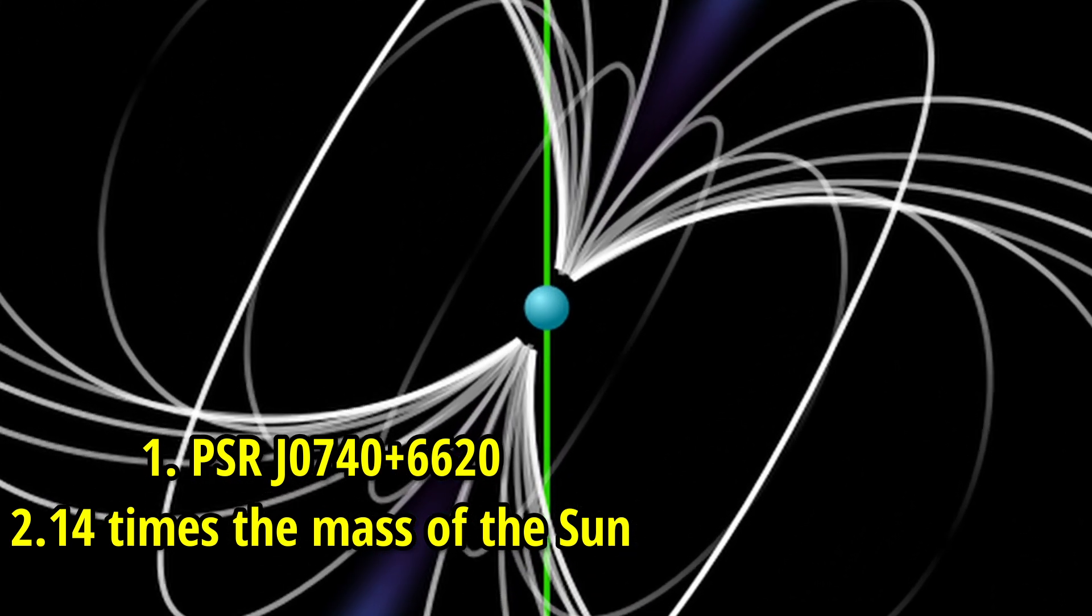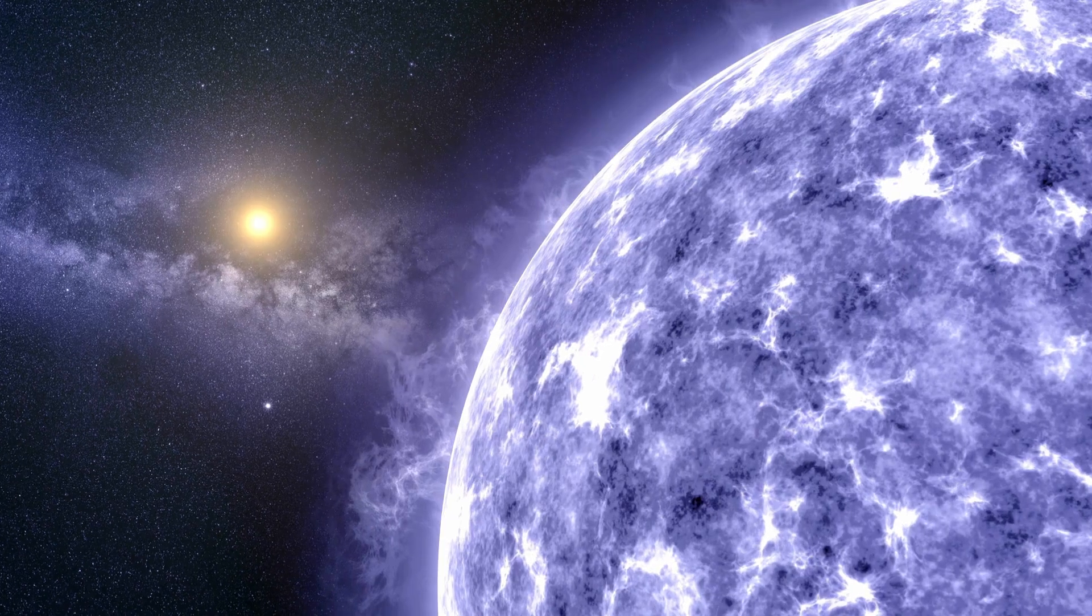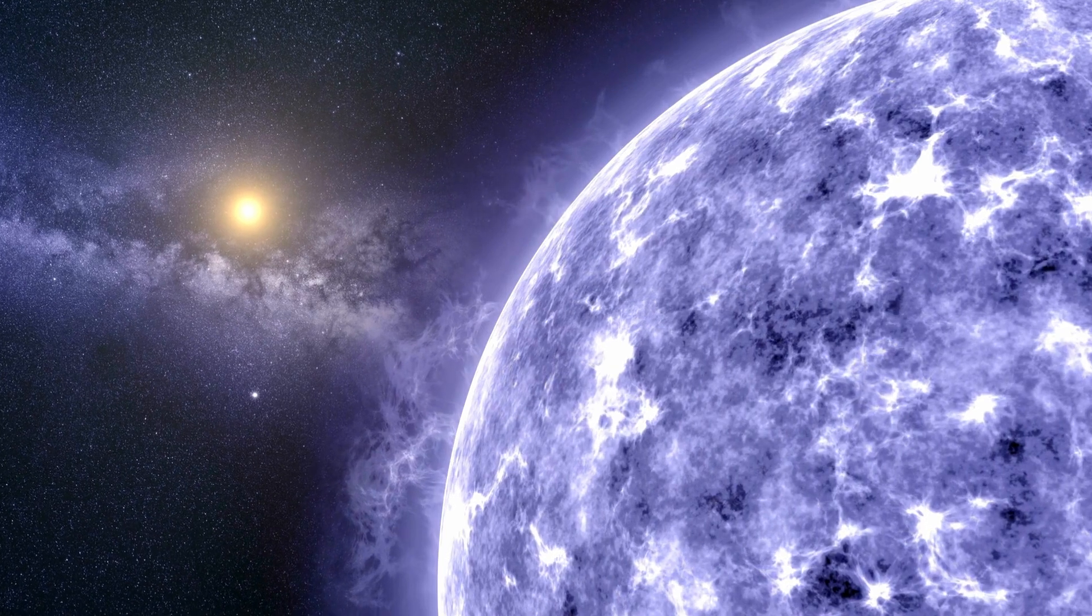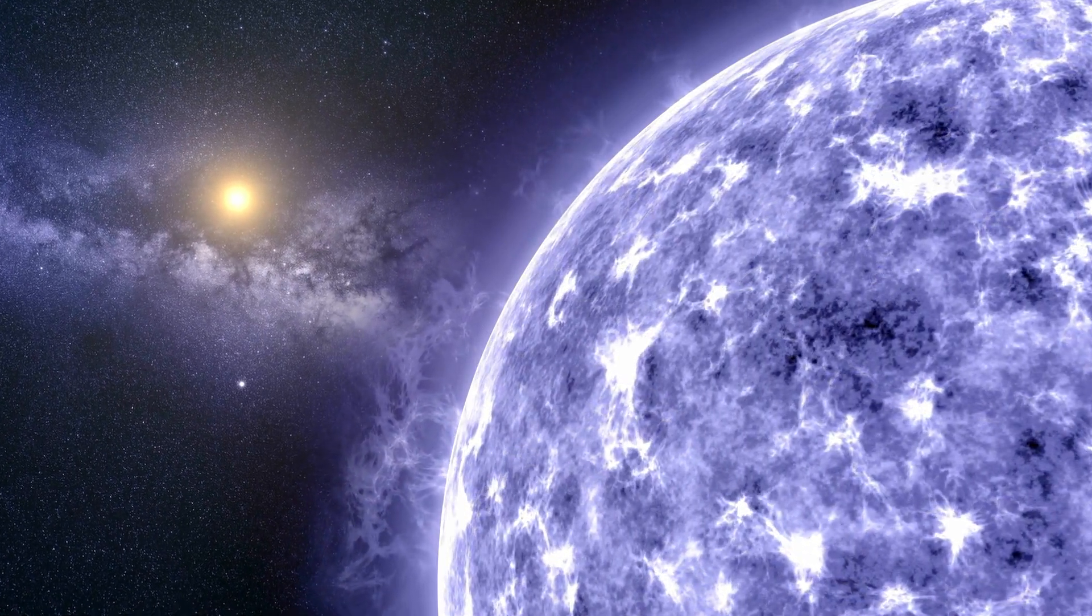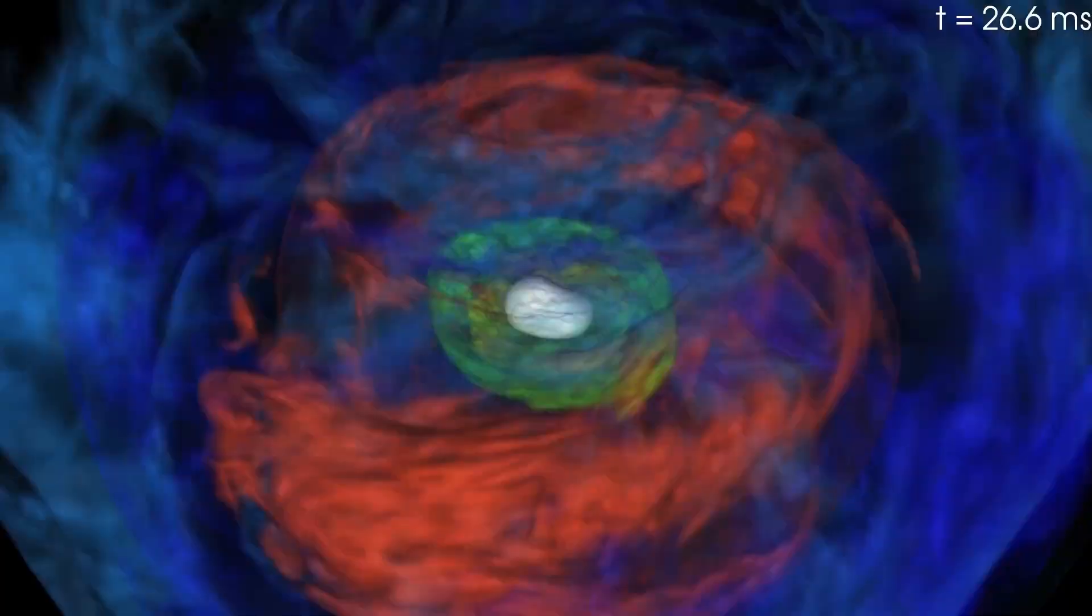This neutron star holds the record for being one of the most massive neutron stars confirmed, residing around 4,600 light years away in the Milky Way. Its extreme mass pushes the theoretical limits of what a neutron star can sustain before collapsing into a black hole.